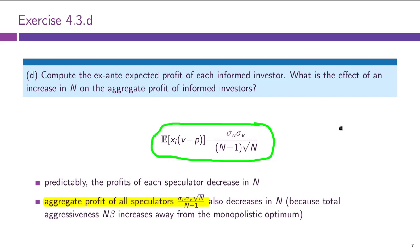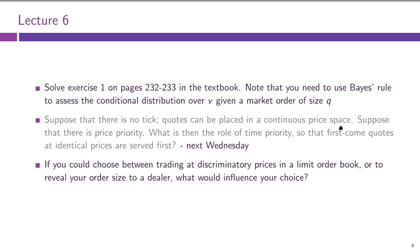The second problem for today is on the Glosten model. In particular, exercise one from chapter six was assigned. A couple of general questions were also given, not tied to any particular problem in the book.